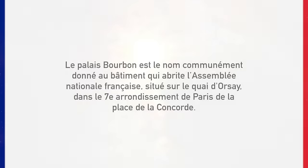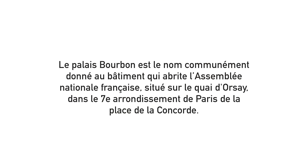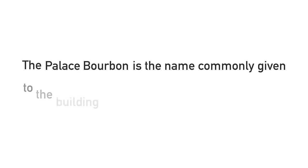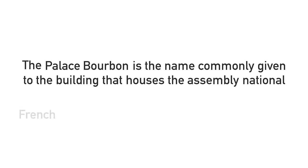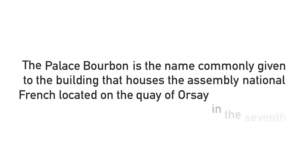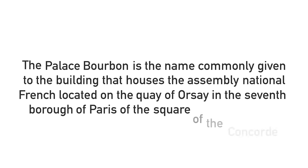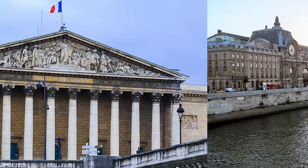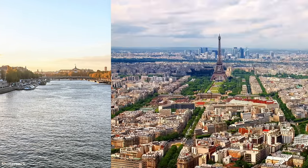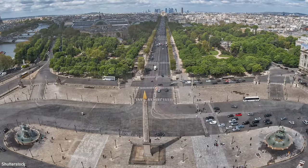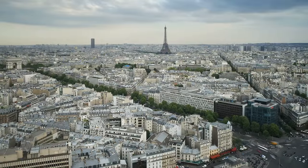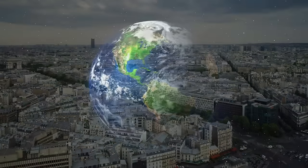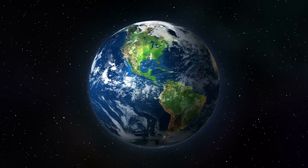Take this sentence in French. Translating it literally word for word gets you, the Palace Bourbon is the name commonly given to the building that houses the Assembly National French located on the Caille of Orsay in the 7th Borough of Paris of the Square of the Concorde. Even if you clean it up to structure it like an English sentence, how much meaning is conveyed to you? What exactly is the French National Assembly? Where is the Caille of Orsay? Where is the 7th Borough? Where is the Concorde Square? Someone familiar to Paris and France would understand what these words mean, but someone from the other side of the world would infer little meaning from them.